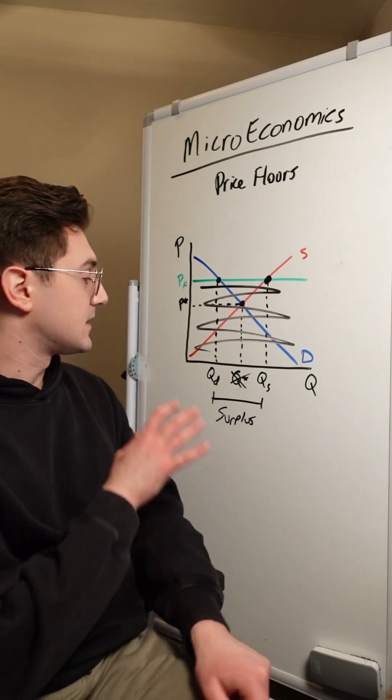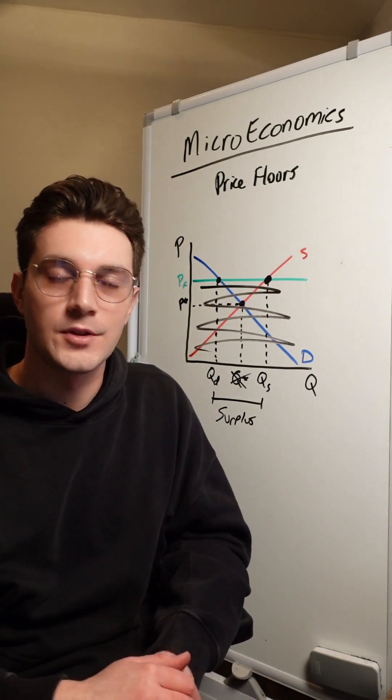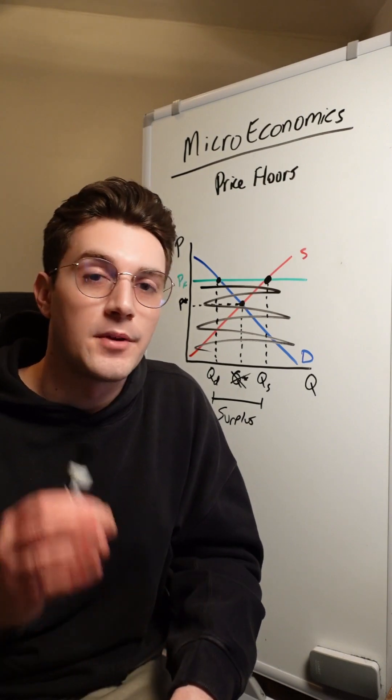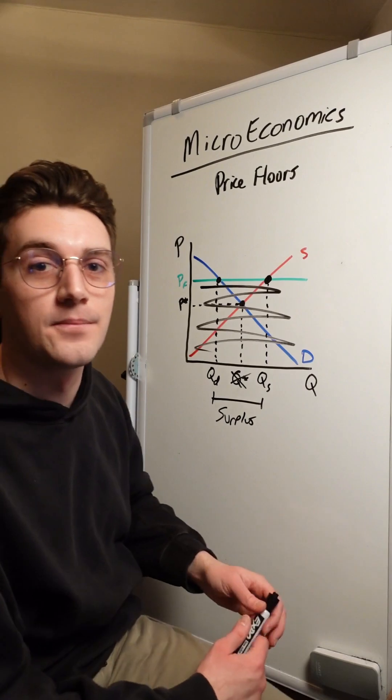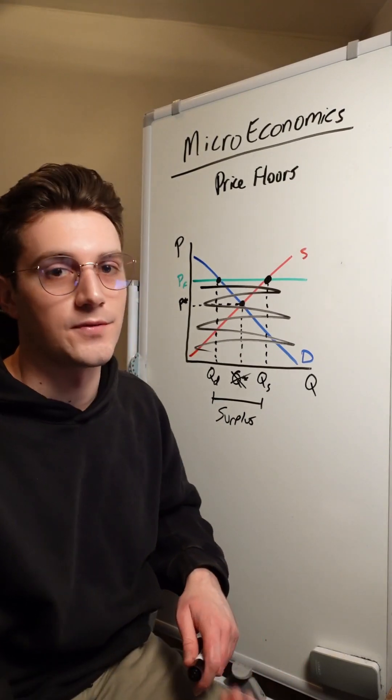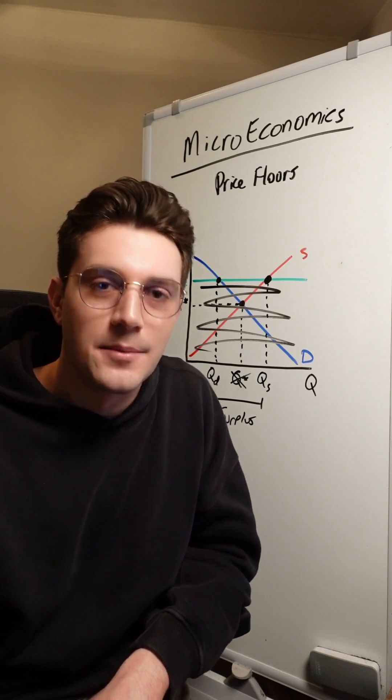And that's kind of it. That's the core of what you need to know about price floors. My biggest tip for you is whenever you have a price floor problem, make sure that the floor occurs above equilibrium because if it doesn't, that means it's a non-binding price floor. I'll post a video on that here in the next couple of days.